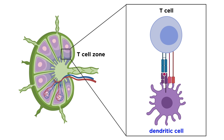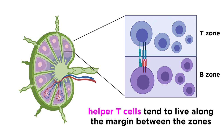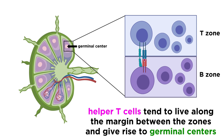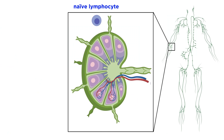Dendritic cells, which have been sampling bits of microbes or cellular debris throughout the body, migrate to the T-cell zone of lymph nodes when they become activated. Here they present these antigens to the T-cells in the lymph node, looking for the T-cell that matches their antigen. Helper T-cells tend to live along the margin between the B- and T-cell zones, so that they can find the B-cell that shares its cognate antigen, and give rise to germinal centers, which are sites of B-cell activation and division.